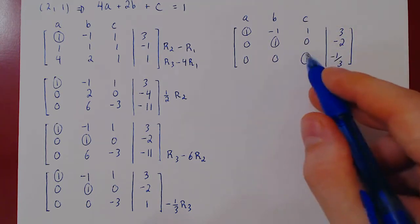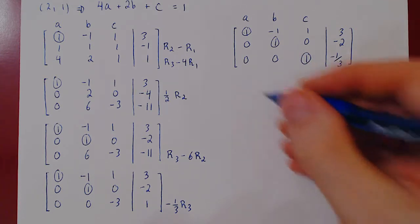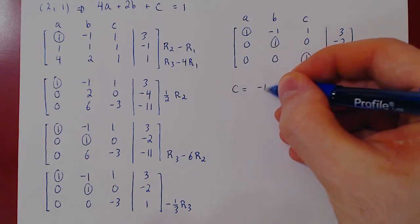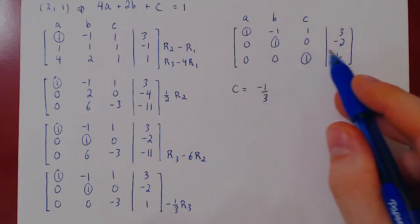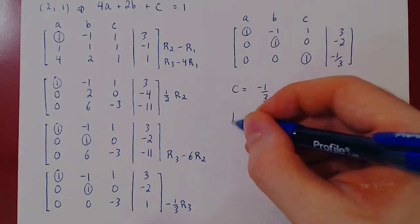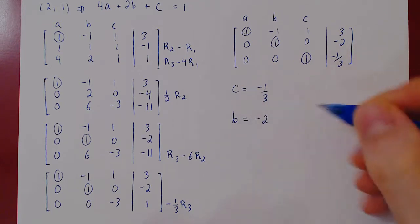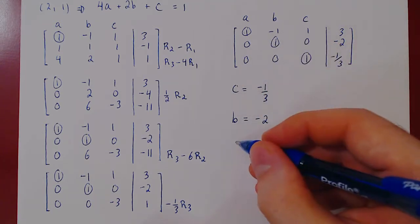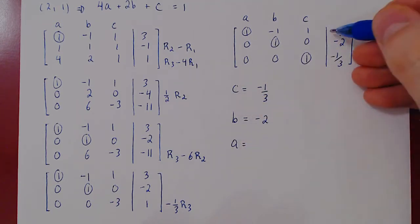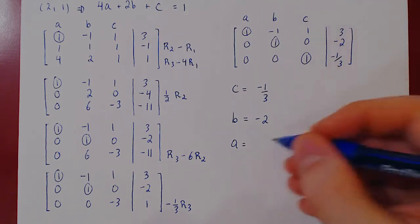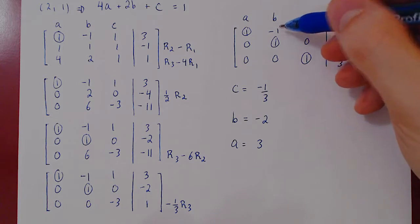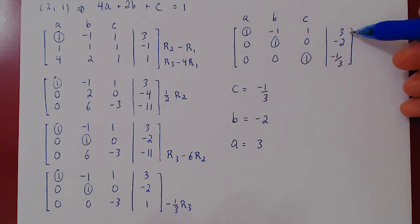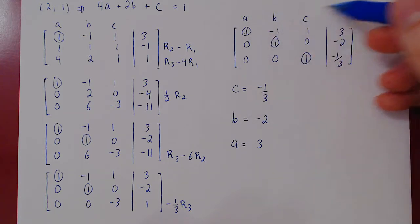We start from the bottom row which says that c equals negative one third. B equals negative two. And to solve for a, this should be a little more interesting. A equals positive three. There's a negative b on this side, on the other side because we want to isolate for a we'll get a positive b.